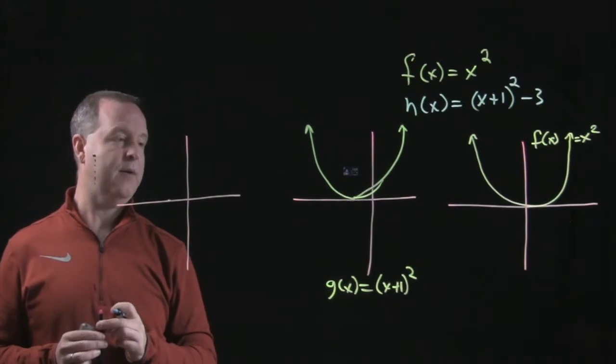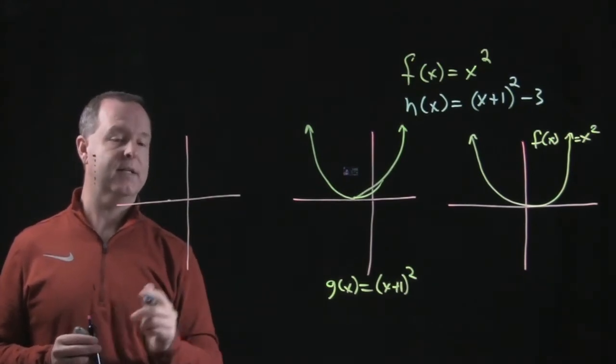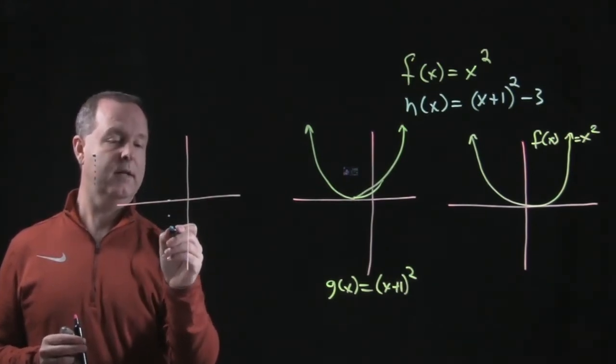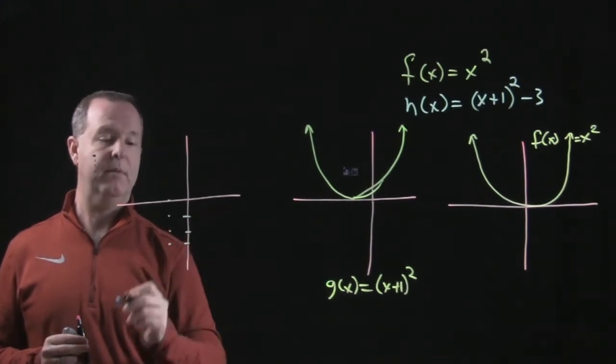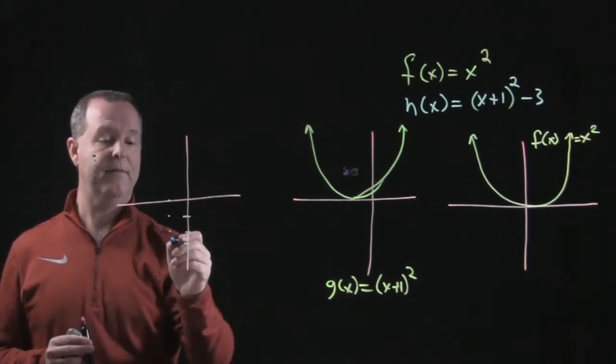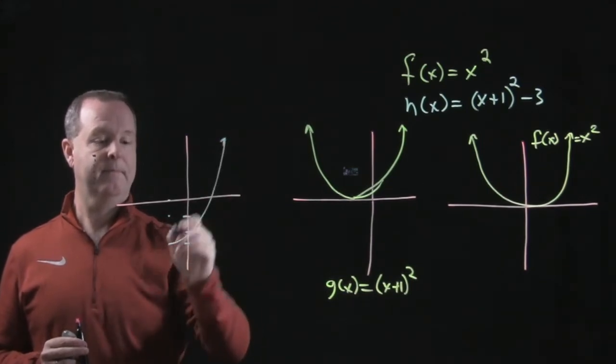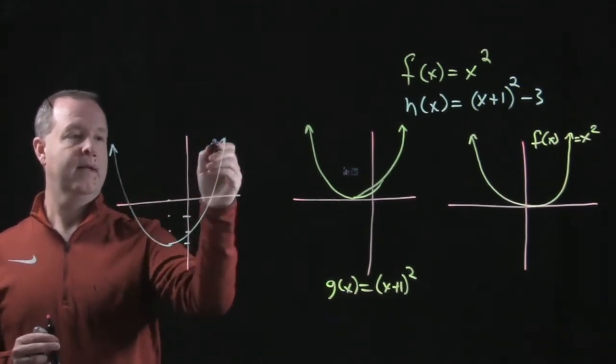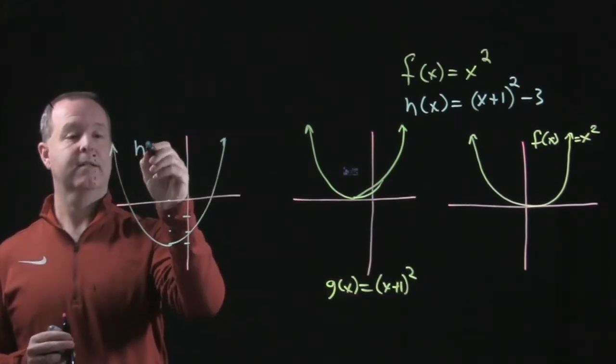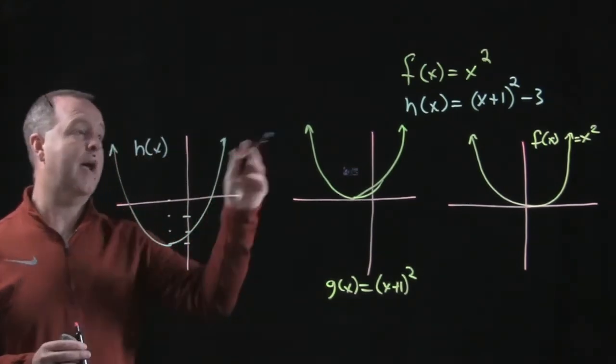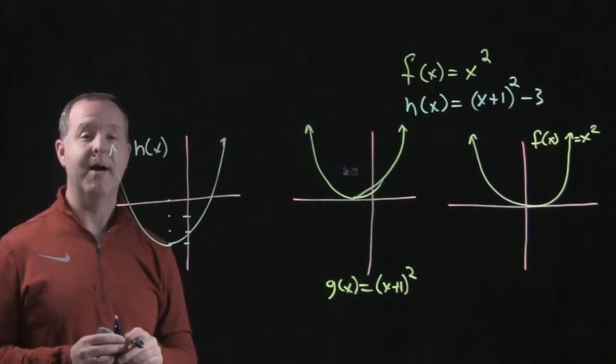That was where the vertex was at roughly. And now we're going to shift that vertex down three units, one, two, three, if you want the little grid marks to help a little bit. And then we take that basic graph, and now it's shifted down three units. So now this is my h(x), which we described as (x+1)² - 3.